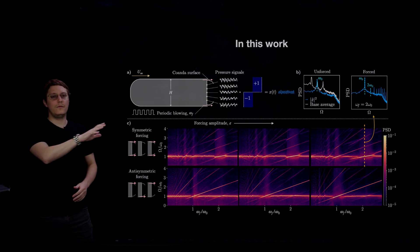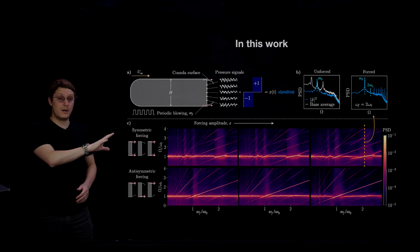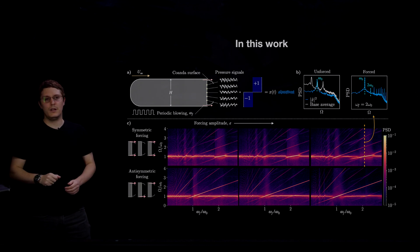So the first one, which we call symmetric forcing, where we are blowing through the top and bottom jets simultaneously. And the second one that we call antisymmetric forcing, where we alternate blowing through the top and bottom jets.